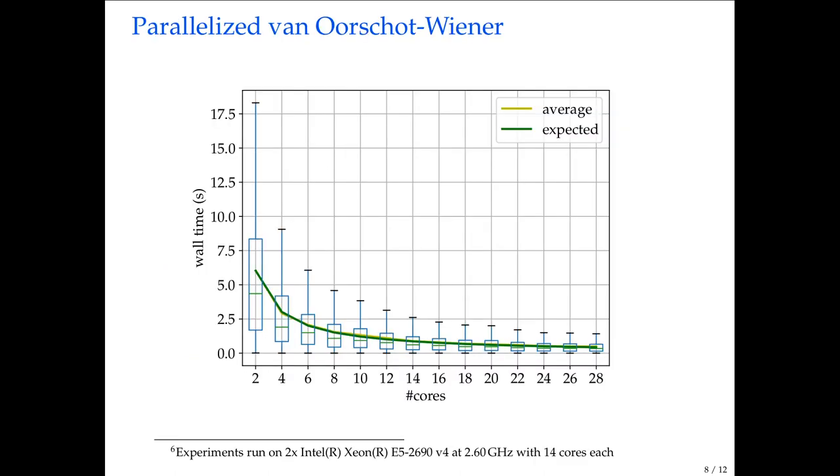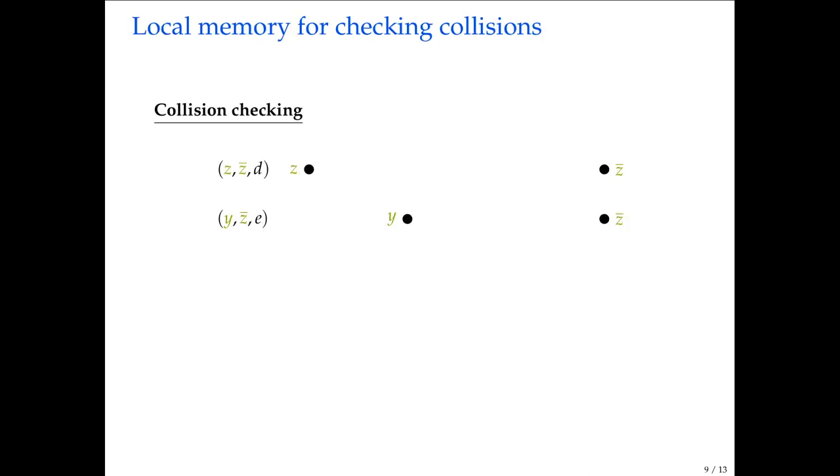If we look at the parallelization, this is our implementation where on the x-axis we look at the number of cores, and on the y-axis we look at the actual wall time of our implementation, measured in seconds here. As you can see, the average depicts just the actual linear optimization compared to a single core. Then we see that the expected value depicts that the average is the average of our runtime, and it matches extremely close to the expected value, which shows that we're really getting a linear speed up, up to 28 cores.